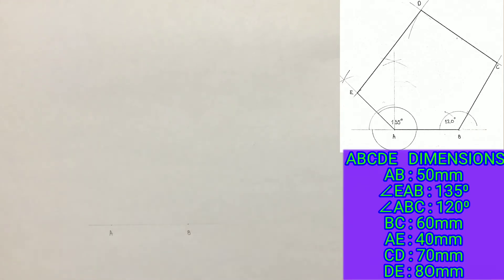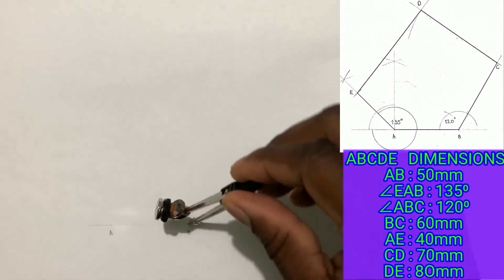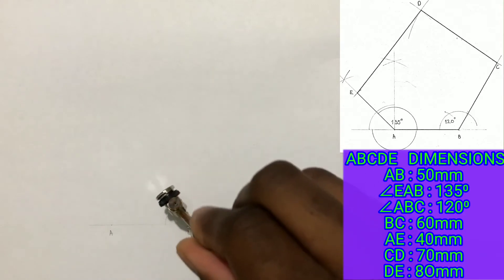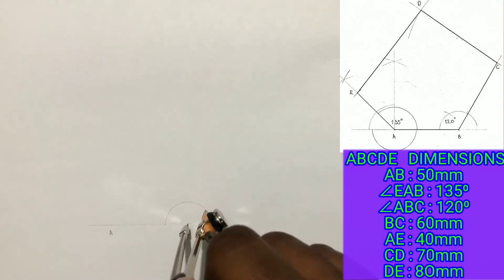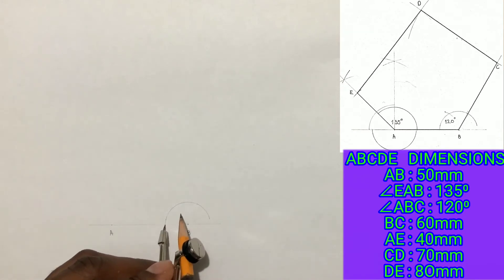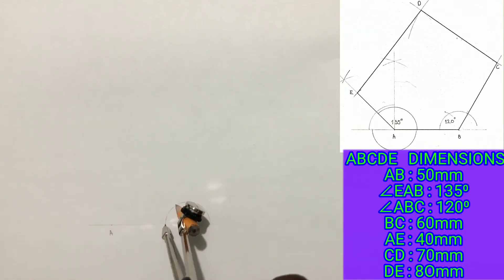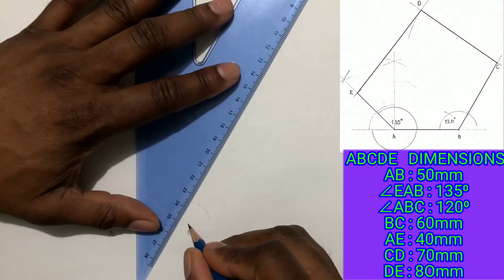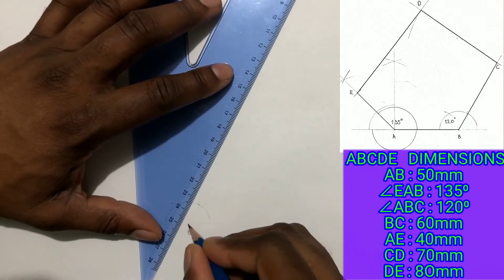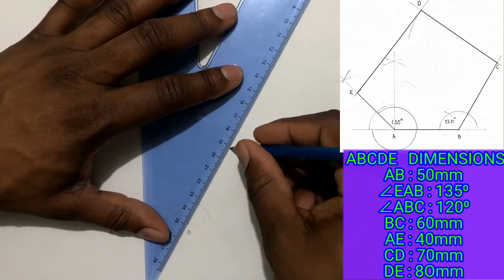From your given dimensions angle ABC measures 120 degrees. Use your compass and construct this 120 degree angle. Now precisely identify your intersection and draw a line from point B through the intersection of arcs.